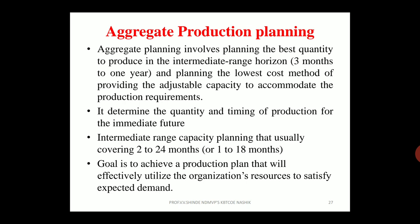It also determines the quantity and timing of production for the immediate future — simply, Future Production Planning. This is Intermediate Range Capacity Planning, usually covering 2 to 24 months or 1 to 18 months. The goal is to achieve a production plan that will effectively utilize the organization's resources to satisfy expected demand. Aggregate Production Planning is used to achieve this goal.